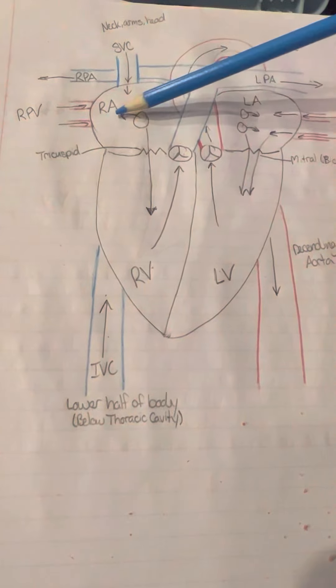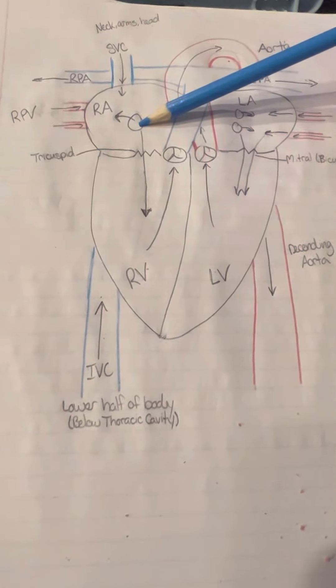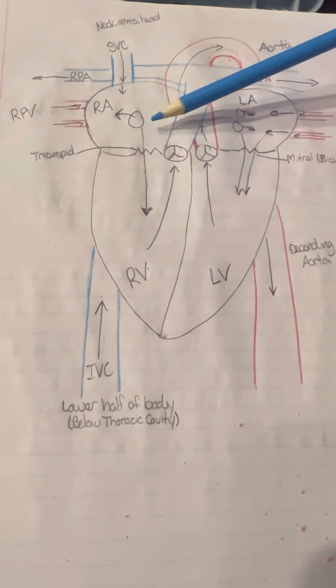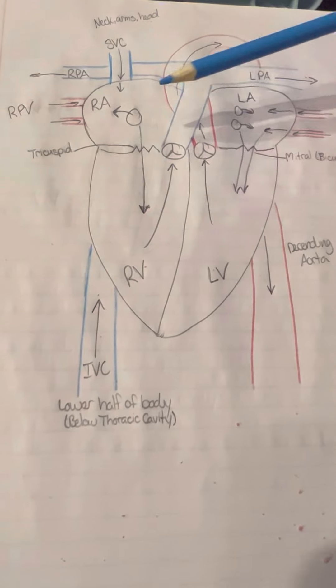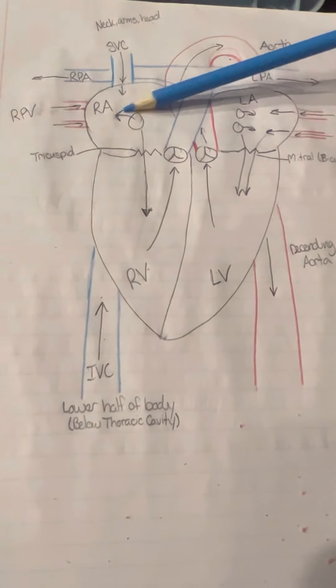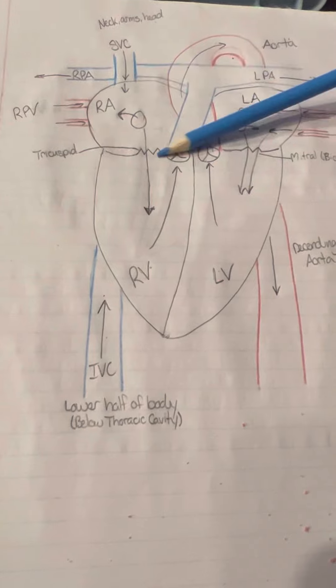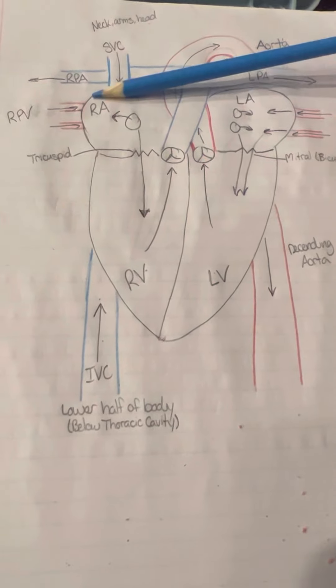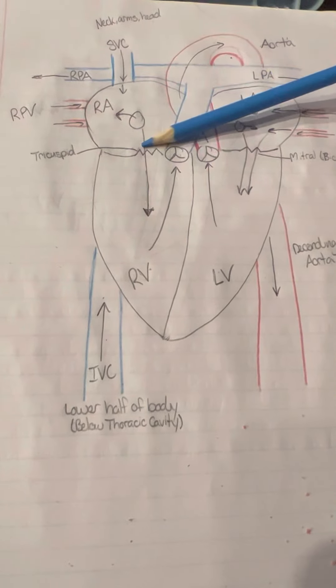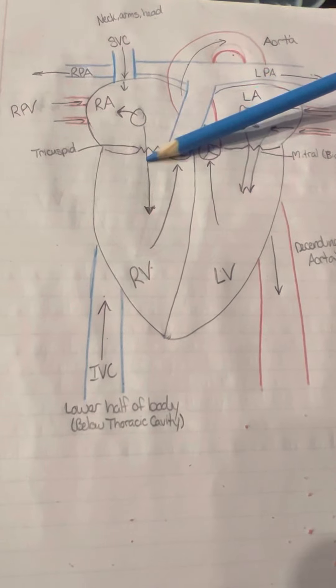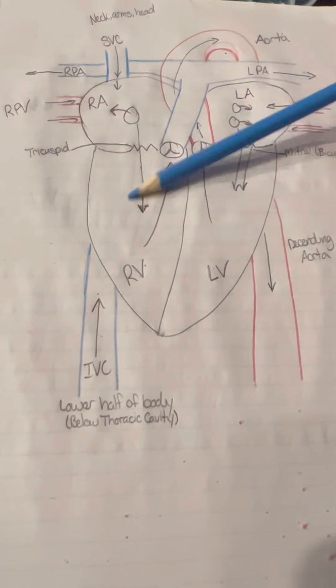Both will come into the right atrium. When there's a contraction of the atria, the blood from the right atrium that filled it will then be pushed through the tricuspid valve into the right ventricle.